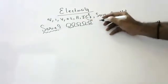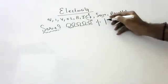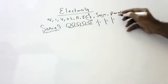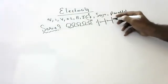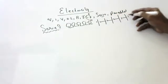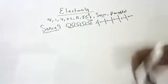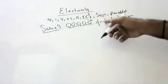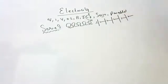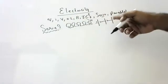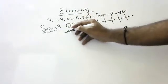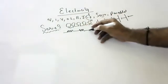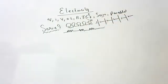Suppose batteries are there — one plus-minus, plus-minus, plus-minus, like this — this is called series connection, end-to-end connection. Positive is connected to negative, positive is connected to negative, positive is connected to negative, like that. This type of connection is called series connection. These are bulbs in series, these are resistors in series. Suppose resistors are there — a resistor is denoted like this. If they are connected like this, this is called series connection.